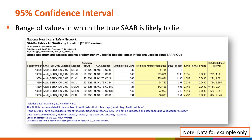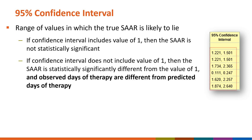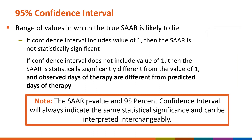The 95% confidence interval is a range of values in which the true SAR is likely to lie. If the confidence interval includes the value of 1, then the SAR is not statistically significant. If the confidence interval does not include the value of 1, then the SAR is statistically significantly different from 1 and observed days of therapy are different from predicted days of therapy. Please note, the SAR p-value and the 95% confidence interval will always indicate the same statistical significance and can be interpreted interchangeably.